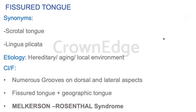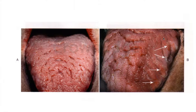Next is fissured tongue, also called scrotal tongue or lingua plicata — remember the synonyms. Etiology: it can be hereditary, due to aging changes, or local environmental factors. Clinical features: there are numerous grooves on the dorsal and lateral aspects of the tongue. It is occasionally associated with geographic tongue. A syndrome very commonly associated with fissured tongue is Melkersson-Rosenthal syndrome.